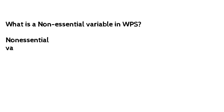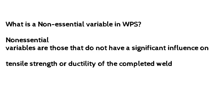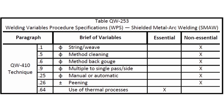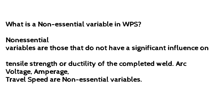What is a non-essential variable in WPS? Non-essential variables are those that do not have a significant influence on tensile strength or ductility of the completed weld. Arc voltage, amperage and travel speed are non-essential variables.